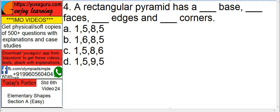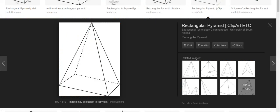A rectangular pyramid has a dashed base, dashed faces, dashed edges, and dashed corners. See, this is a rectangular pyramid.